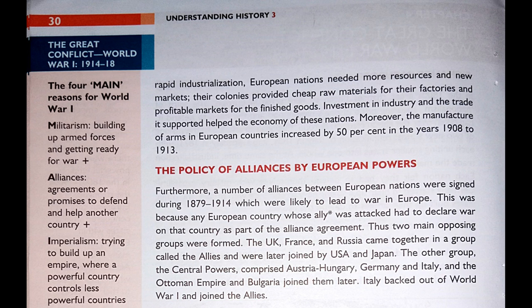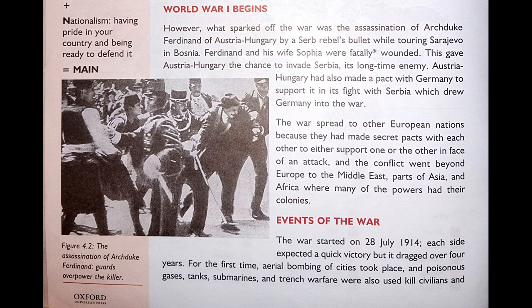Thus two main opposing groups were formed. The UK, France and Russia came together in a group called the Allies, and were later joined by the USA and Japan. The other group, the Central Powers, comprised Austria-Hungary, Germany and Italy, and the Ottoman Empire and Bulgaria joined them later.